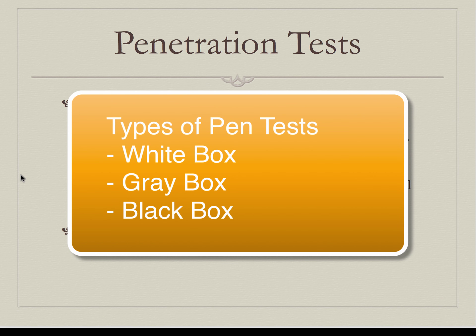A penetration test can be white box, gray box, or black box. In a white box test, the penetration tester knows everything about the network and goes through the motions to see what else can be found or whether known issues can be leveraged for an attack. In a gray box test, the tester knows some things but still has to enumerate additional devices on the network. In a black box test, the penetration tester knows nothing about the network — coming in just as an attacker would, gathering information, identifying vulnerabilities, and trying to achieve the target.